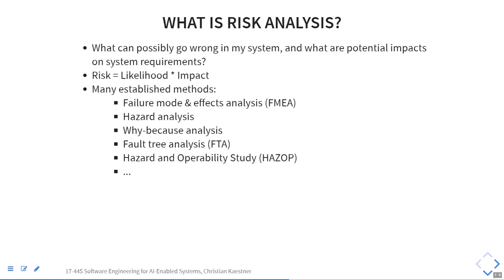Risk typically has two components: the likelihood of something occurring, and the impact when it occurs. Wiping out all of humanity is really bad and 10% is a high likelihood — pretty high risk. Causing a slight inconvenience by beeping occasionally is not very risky. Crashing a car with a person inside has pretty high impact — the actual risk depends on the full analysis. There are many methods from the safety community for thinking about possible risks and how bad they are.